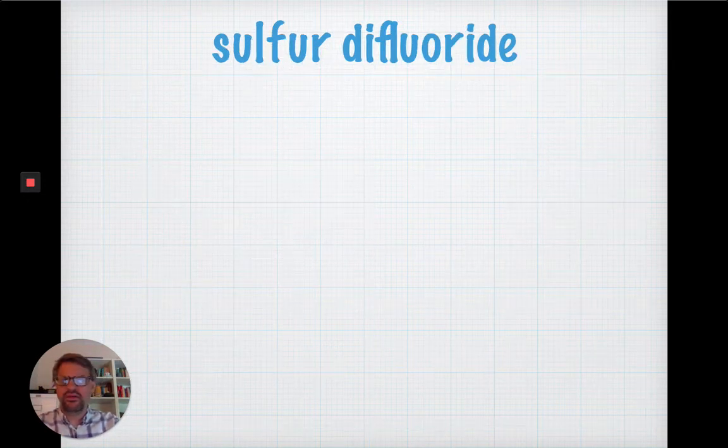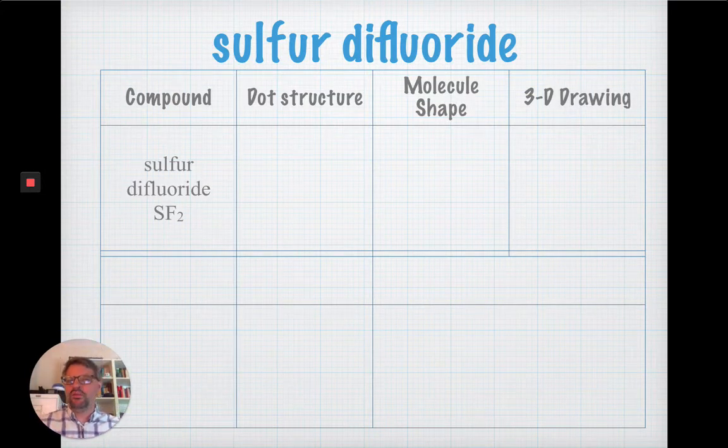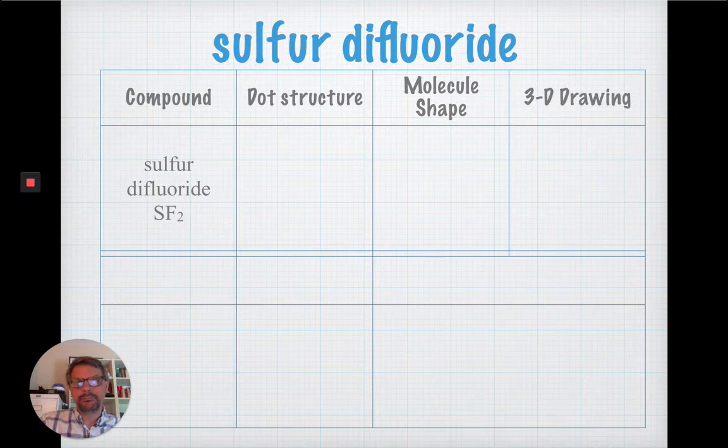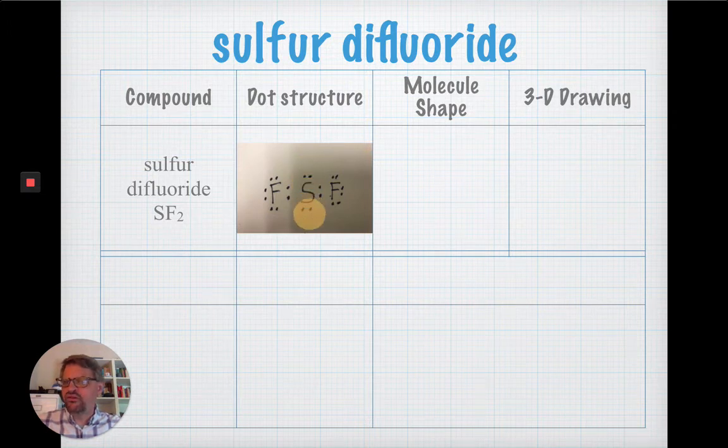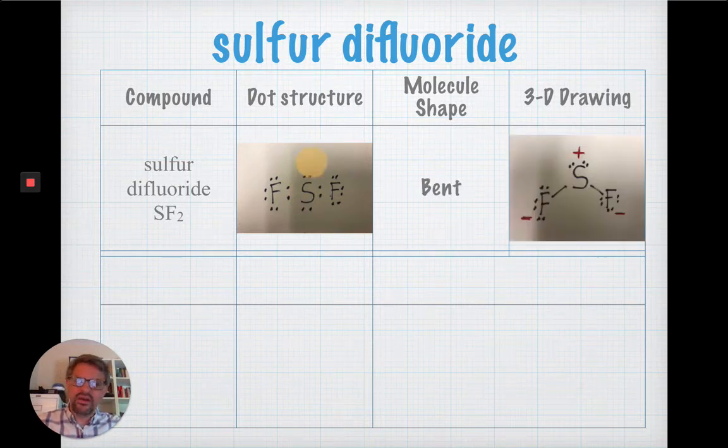Here's another one. Sulfur difluoride. Take a moment and see if you can determine the shape of sulfur difluoride. Here's your Lewis dot structure. You'll notice there are two lone pairs on the sulfur. So, AX2E2. It has a bent shape, much like water. Here's a drawing.